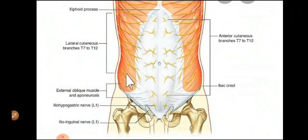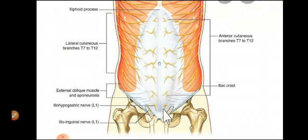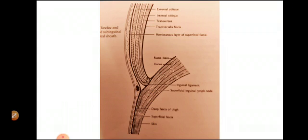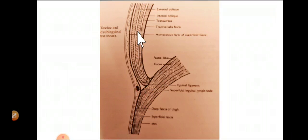Here we see the external oblique muscle, which is the muscle of the anterior abdominal wall, along with its aponeurosis. This whitish part that you see is the aponeurosis. This is a sagittal section through the anterior abdominal wall. What you see here is the skin, the superficial fascia, then the external oblique muscle, and lower down the aponeurosis of the external oblique muscle. Then we have the internal oblique, the transversus abdominis, and deeper to that we have the transversus fascia.